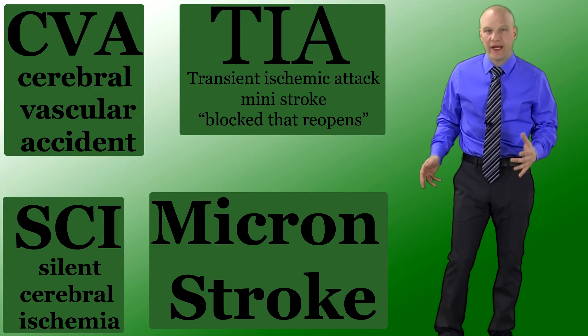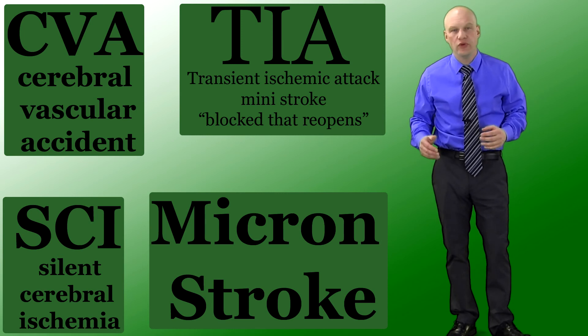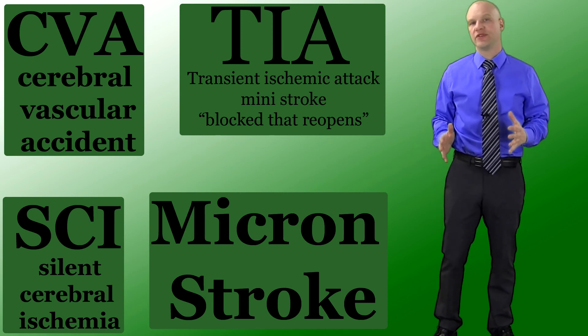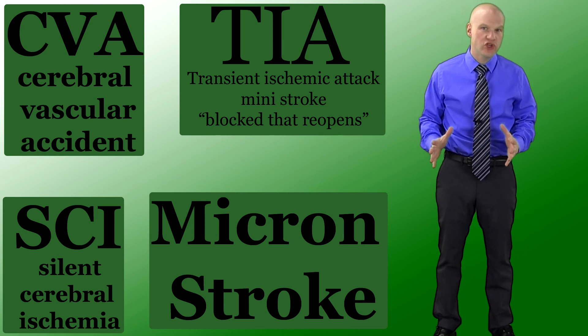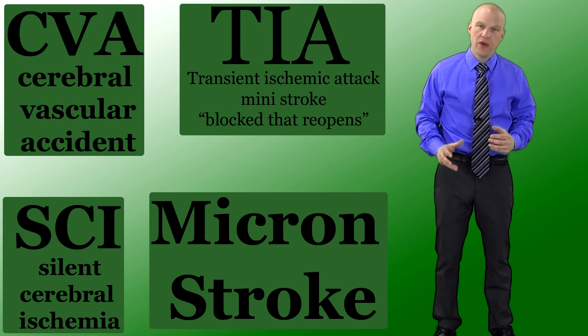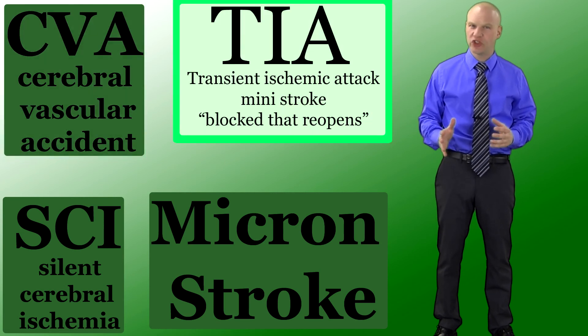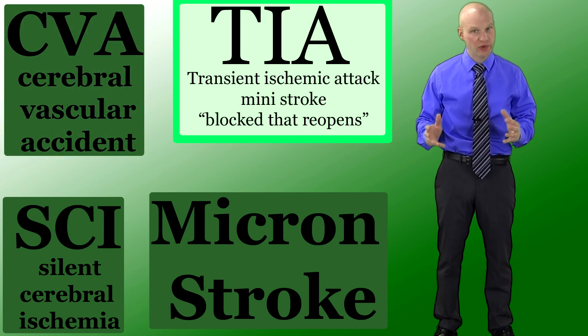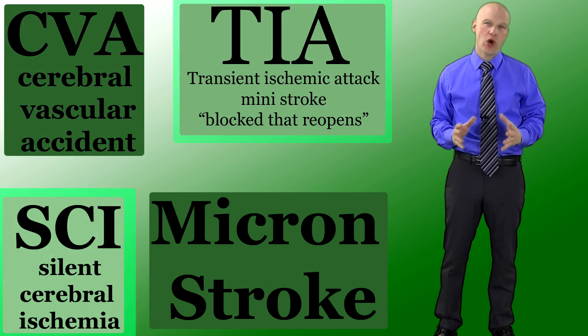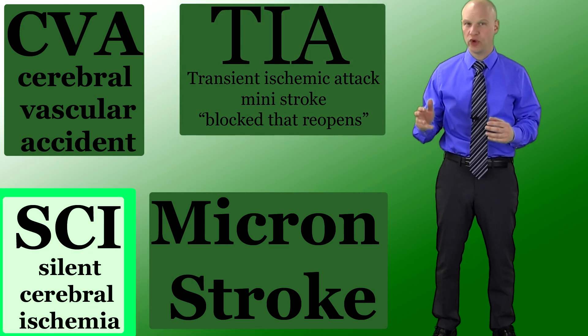When damage comes to the brain, in general, your healthcare team and the medical textbooks will refer to this damage in three different ways. They will talk about massive CVA, which is a big stroke, a TIA, which is considered a mini-stroke or transient ischemic attack, and then also a term called silent cerebral ischemia.